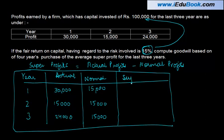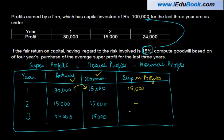Super profit equals actual profits minus normal profit. So: 30,000 minus 15,000 gives 15,000. 15,000 minus 15,000 gives 0 — so there is no super profit for year 2. 24,000 minus 15,000 gives 9,000.